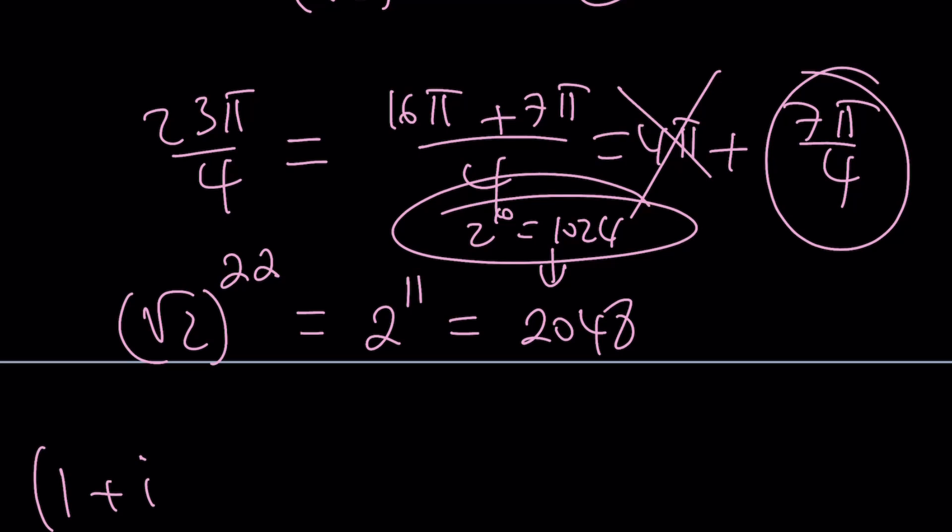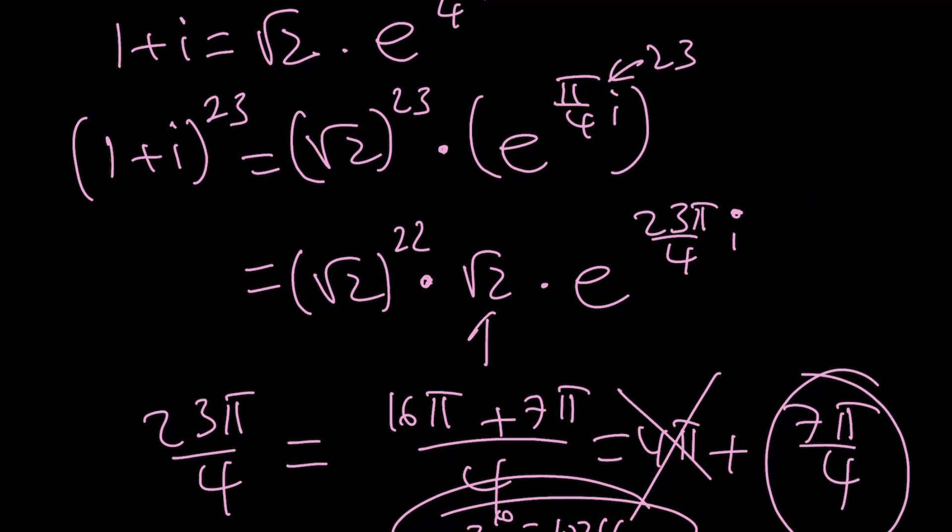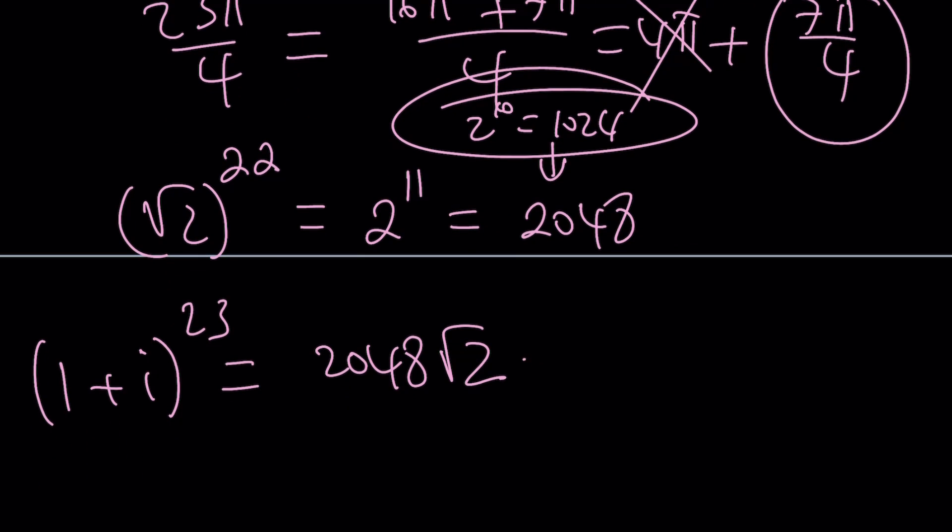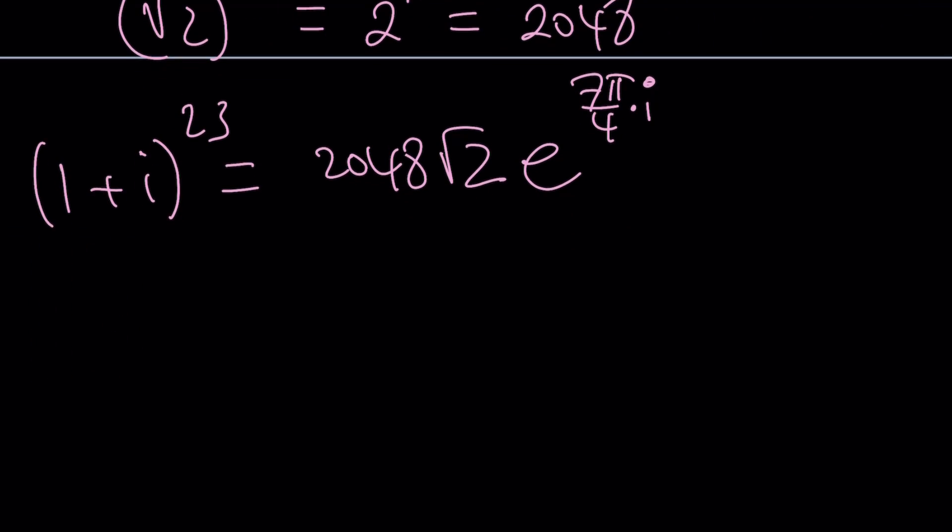Now, we get the following. 1 plus i to the power 23 becomes square root of 2 to the power 22, which is 2048 multiplied by root 2, because remember, we had an extra root 2 because 23 is an odd number, multiply by e to the power 7 pi over 4i. A lot of times, I forget to write the i.